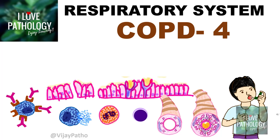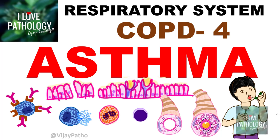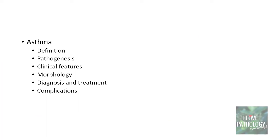Hello everyone, welcome back to this short tutorial from Pathology Made Simple at ilawepathology.com. This is in continuation with the chronic obstructive pulmonary disease series. This is the fourth and final part of this series where I will be discussing about asthma. In the earlier sessions we had discussed about emphysema, chronic bronchitis, bronchiectasis, and today we will discuss in detail about asthma. We will look into the definition, the pathogenesis, clinical features, and morphology.